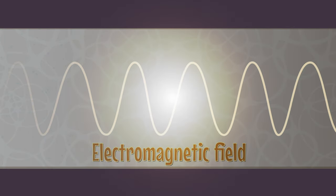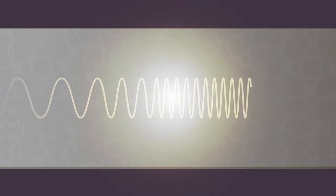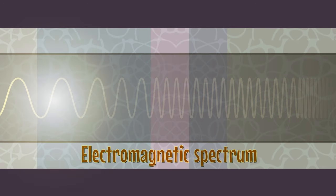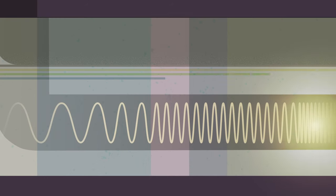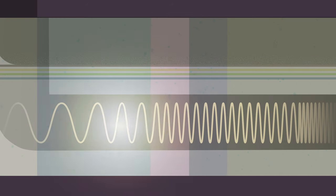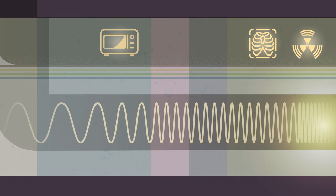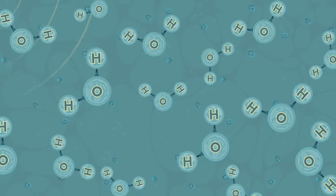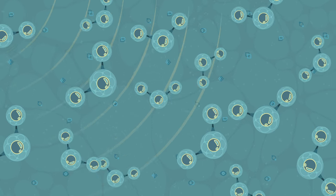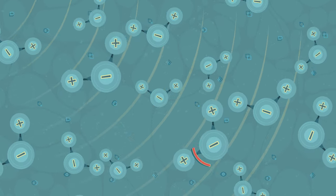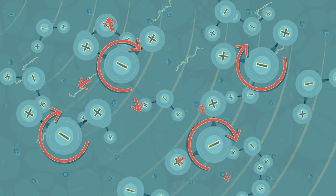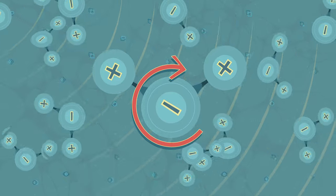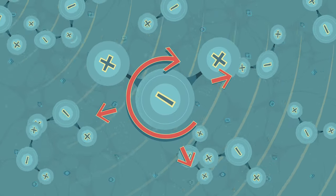All light energy travels in waves of oscillating electric and magnetic fields. These oscillations span a range of frequencies comprising the electromagnetic spectrum. The higher the frequency, the more energetic. Gamma rays and x-rays have the highest frequencies, microwaves and radio waves the lowest. Generally, light's oscillating electric field exerts forces on charged particles, like the electrons in a molecule. When light encounters polar molecules, like water, it can make them rotate, as their positive and negative regions are pushed and pulled in different directions.